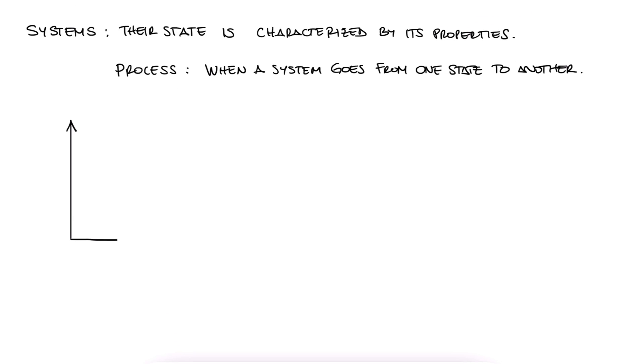On a 2D plot, where we show a system's properties, we can show the state of a system as a dot. In other words, as a location with two property coordinates. If the properties of the system change, there would be a new location for the new state with different coordinates.